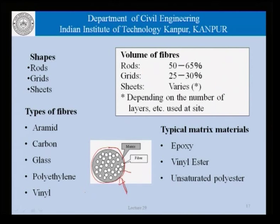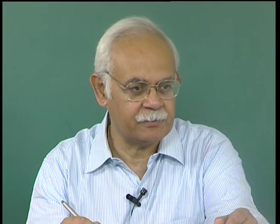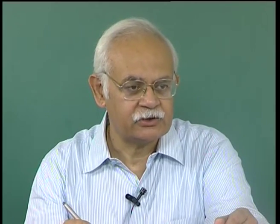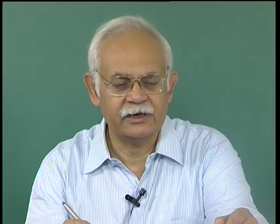The most interesting part of the CFRM is that the volume of fibers can be varied. If we vary the volume of these fibers, we can vary the properties of the material. Putting it the other way round, if we want a certain property in the CFRM, we can design it by changing the volume of fibers, apart from the material of the fibers.